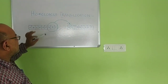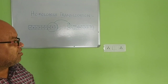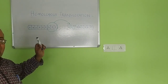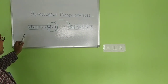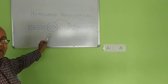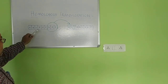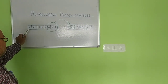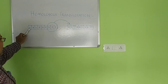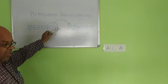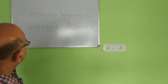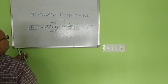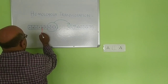Now I shall explain homologous translocation in detail. The topic is homologous translocation. A chromosome is known as the carrier of genes, which will carry some genes linearly aligned on it. Here I placed nine genes in one chromosome, arranged in linear manner like A, B, C, D, E, F, G, H, I. The position of the centromere is at E.